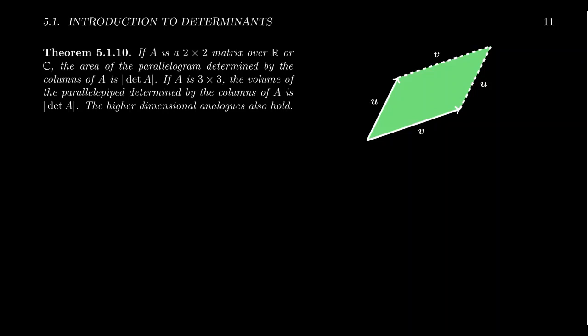Determinants can be used to calculate area. So if we have two vectors, u and v, inside the plane, associated to any two vectors, we can form a parallelogram. This is what the parallelogram rule was about all before.